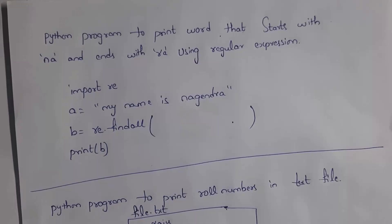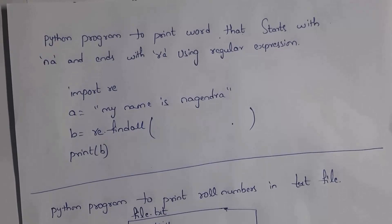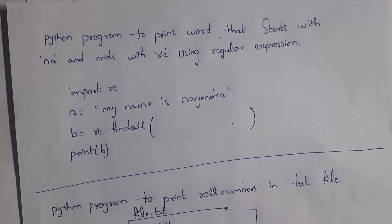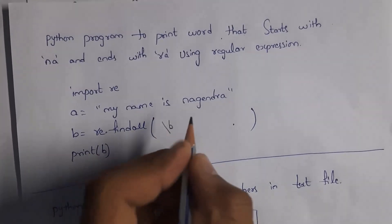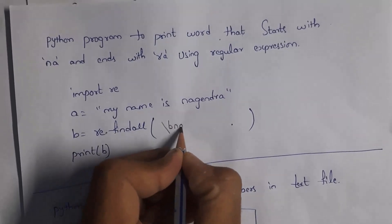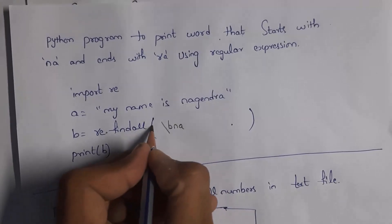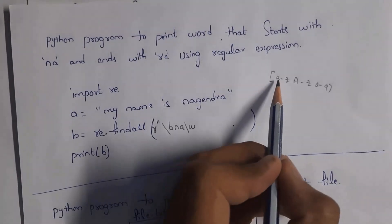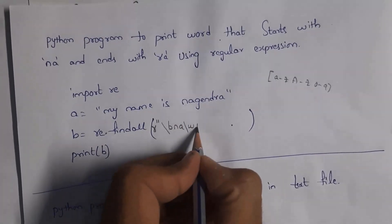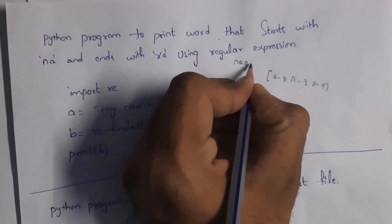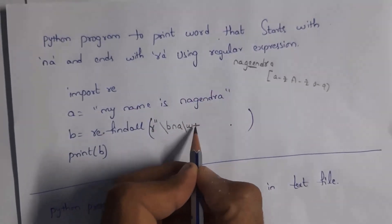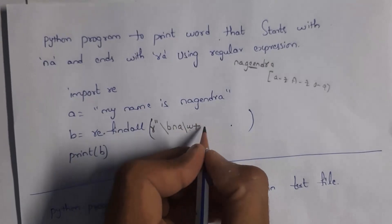Next, write a Python program to print words that start with 'na' and end with 'ra'. For example, 'nagendra' starts with 'na' and ends with 'ra'. Write b equal to re.findall. Use r'\bna\w+ra$' — \b for word boundary, na for the start, \w+ for any characters in between (one or more), and ra followed by dollar sign to match the ending characters.